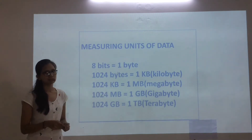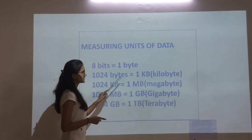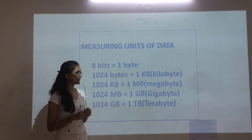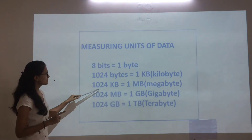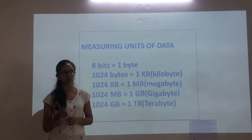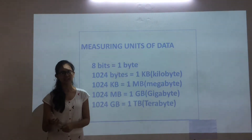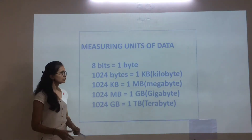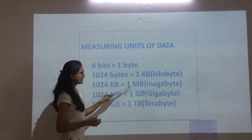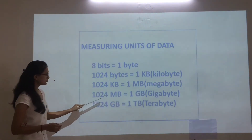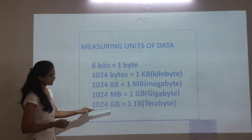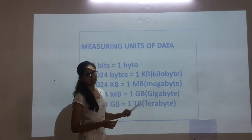1 byte, 1024 bytes equals 1 KB. 1024 KB equals 1 megabyte (MB). 1024 MB equals 1 GB, which means gigabyte. 1024 GB equals 1 TB, which means terabyte. You may have heard your brother or sister say 'I only have 100 MB' or 'I only have 1 GB' — all of that is counted in these units.